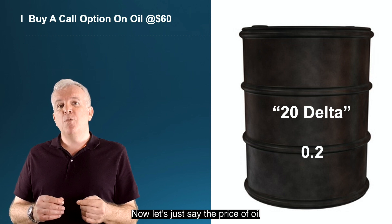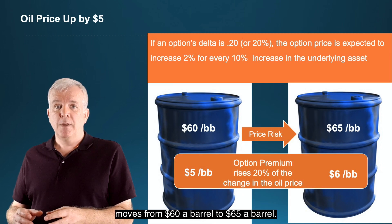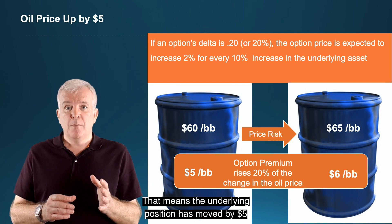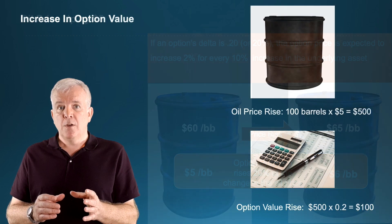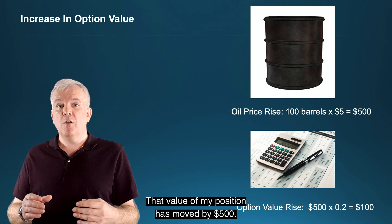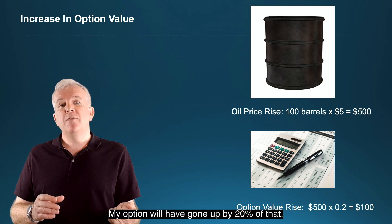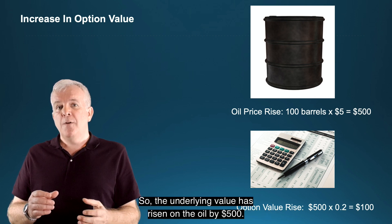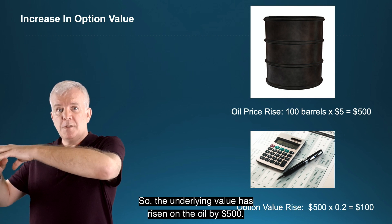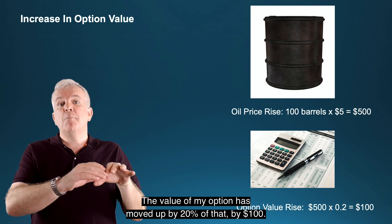Now let's say the price of oil moves from $60 a barrel to $65 a barrel. That means the underlying position has moved by $5 on 100 barrels of oil, so the value of my position has moved by $500. My option would have come up by 20% of that — the underlying value has risen by $500, so the value of my option has moved up by $100.